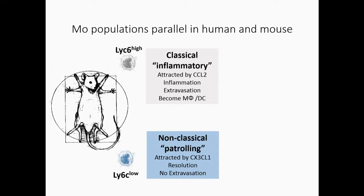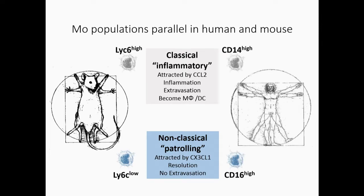They are marked by the marker Ly6C, which we can use on flow cytometry. And obviously, I'm not interested in curing mouse cancer. So fortunately, there are parallel populations in humans by the markers CD14 and CD16. And this is really important, because they have completely different roles.